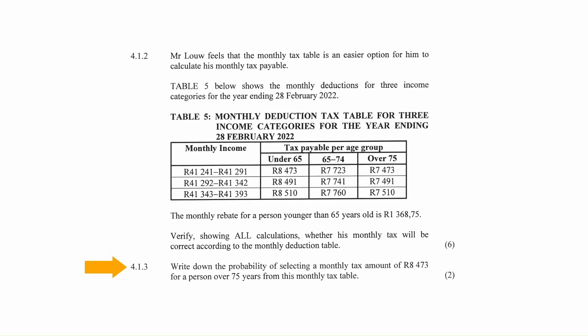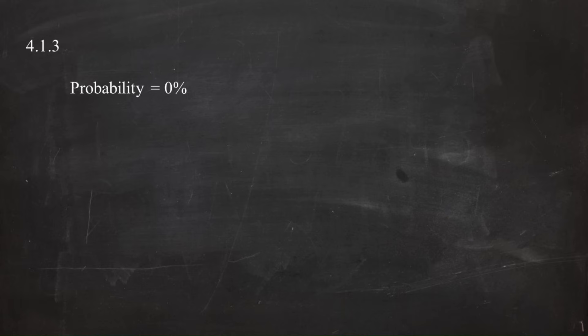In question 4.1.3, you have to write down the probability of selecting a monthly tax amount of R8,473 for a person over the age of 75 years. From the monthly tax table in question 4.1.2, no monthly tax deduction for any income category equals R8,473 for individuals over 75. Therefore, there is a 0% chance of selecting a monthly tax amount of R8,473 for a person over the age of 75 years.